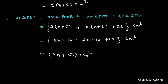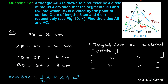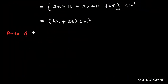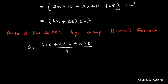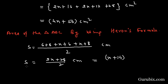Now we shall calculate the area of triangle ABC using Heron's formula. For that we calculate the semi-perimeter S. The semi-perimeter S equals (6 + 8 + X + 6 + X + 8) divided by 2, which simplifies to X plus 14 centimeters.